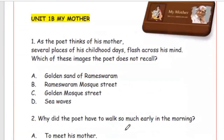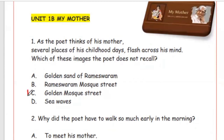Now Unit 1B, My Mother. Question 1: As the poet thinks of his mother, several images of his childhood flash across his mind. Which of these does the poet not recall? Options: golden sand of Rameshwaram, Rameshwaram Mosque Street, Golden Mosque Street, sea waves. The answer is Option C, Golden Mosque Street — there is no mention of it.